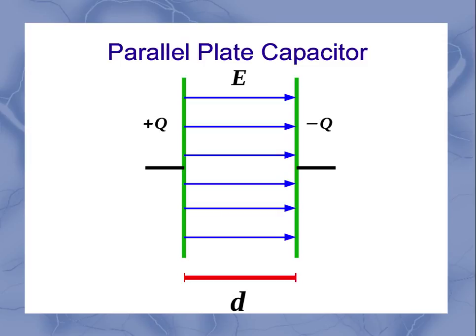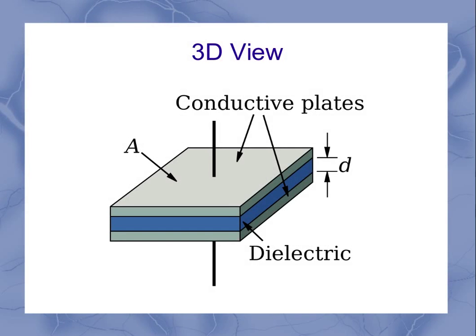So this is a general schematic diagram for the very common parallel plate capacitor, and we'll study it in more detail later. Here's a 3D view of this parallel plate capacitor, so you can see that these really are flat plates. Each one of these two plates has a plate area of A, and the two plates are separated by a distance d.